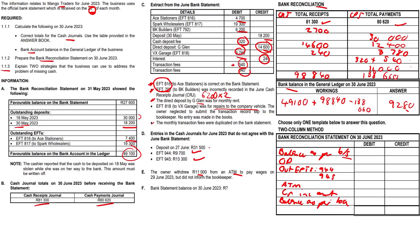The ATM withdrawal for wages of R11,000 goes on the credit side. We credit the incorrect amount - the transaction fees that were duplicated, R540, goes on the credit side. The balance per bank account is R9,280.